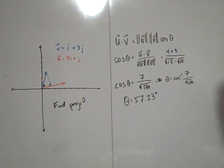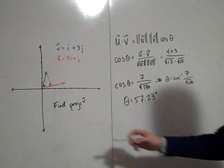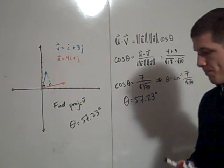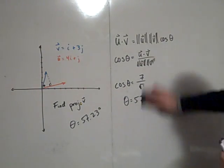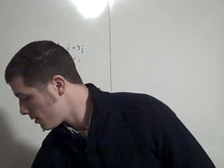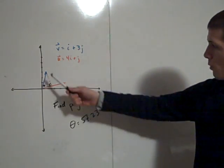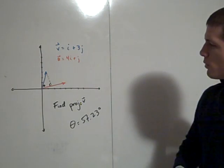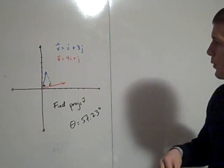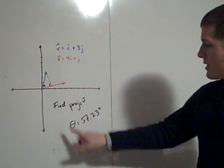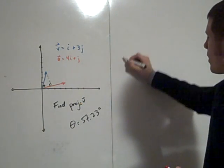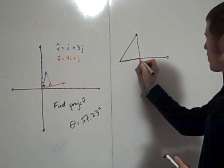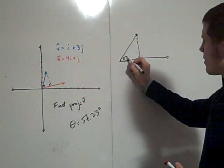That's approximate. So theta equals 57.23 degrees — that's an important piece of information. Now, projecting v onto u, the magnitude of v in the direction of u is the magnitude of v times the cosine of theta. Consider this triangle: this side here is the projection I want to find, and this angle is 57.23 degrees.